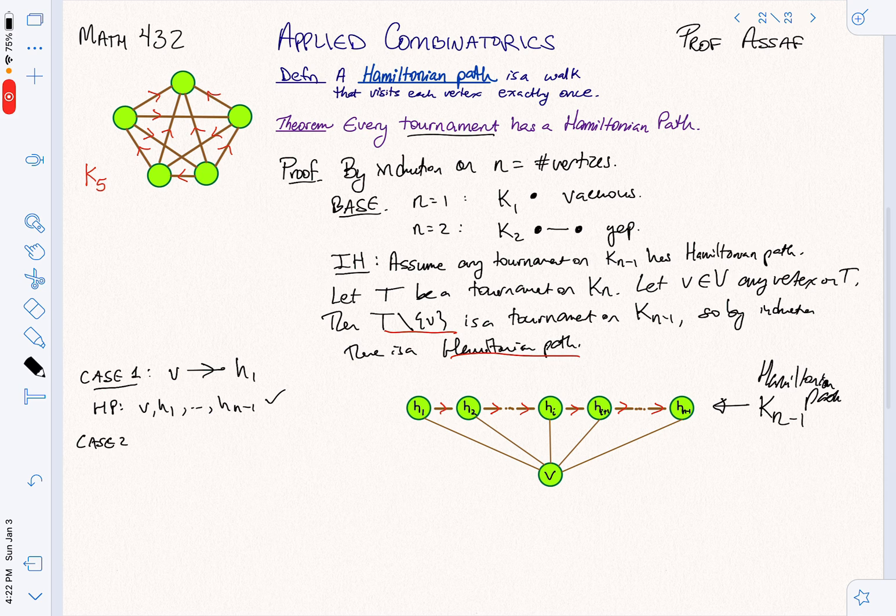What else could I do? That's one possibility. How could I put V at the end? I could have Hn minus 1 go to V. What does that look like? That looks like I have an arrow like this, and here is my Hamiltonian path. So that one also works. I take the one that I had, Hn minus 1 to V. Done.